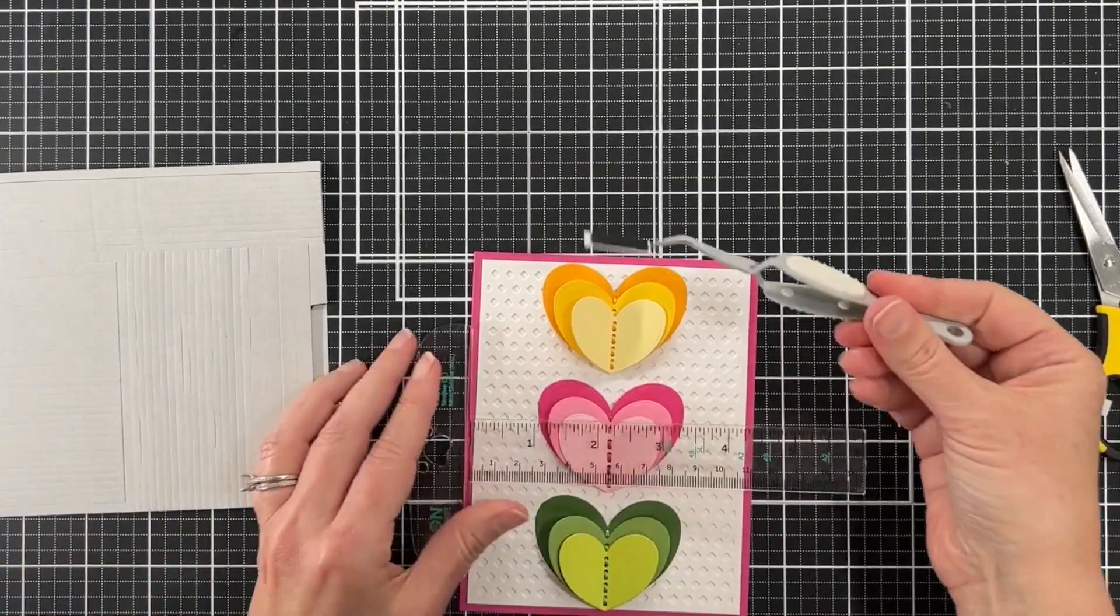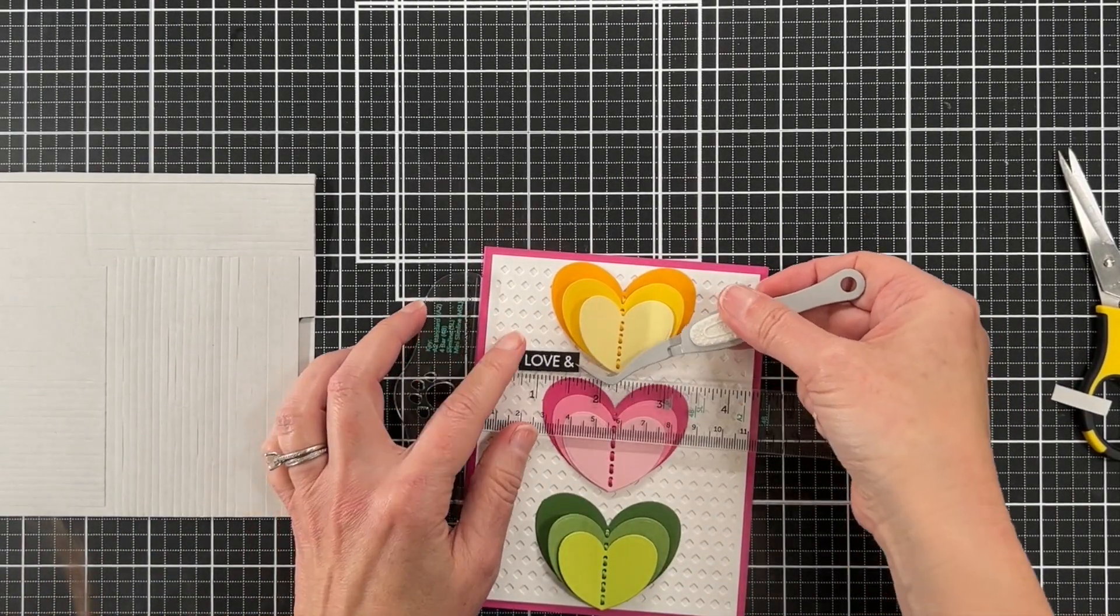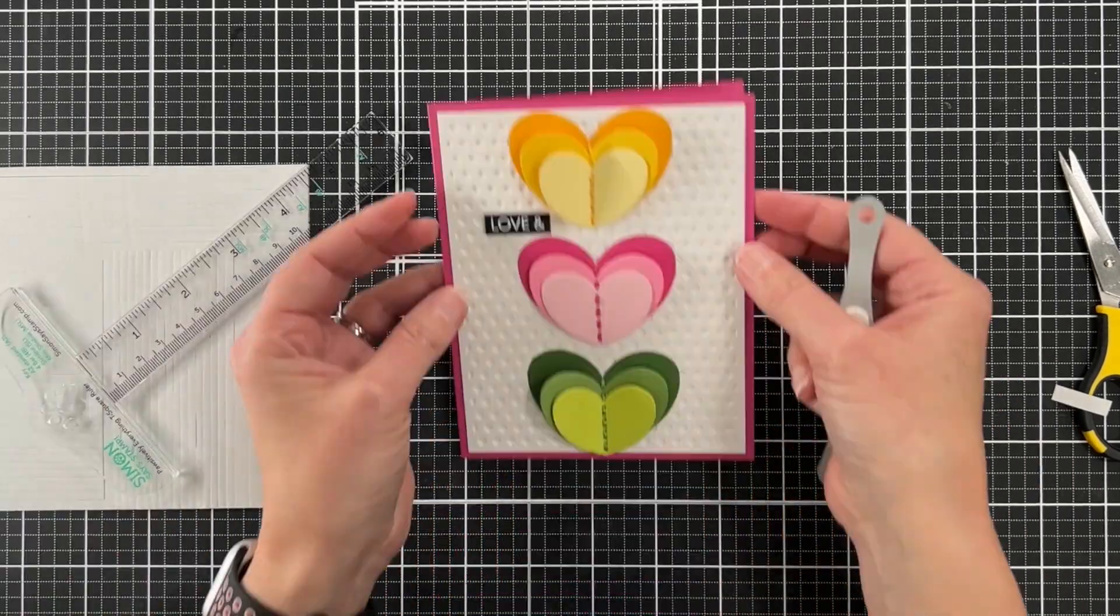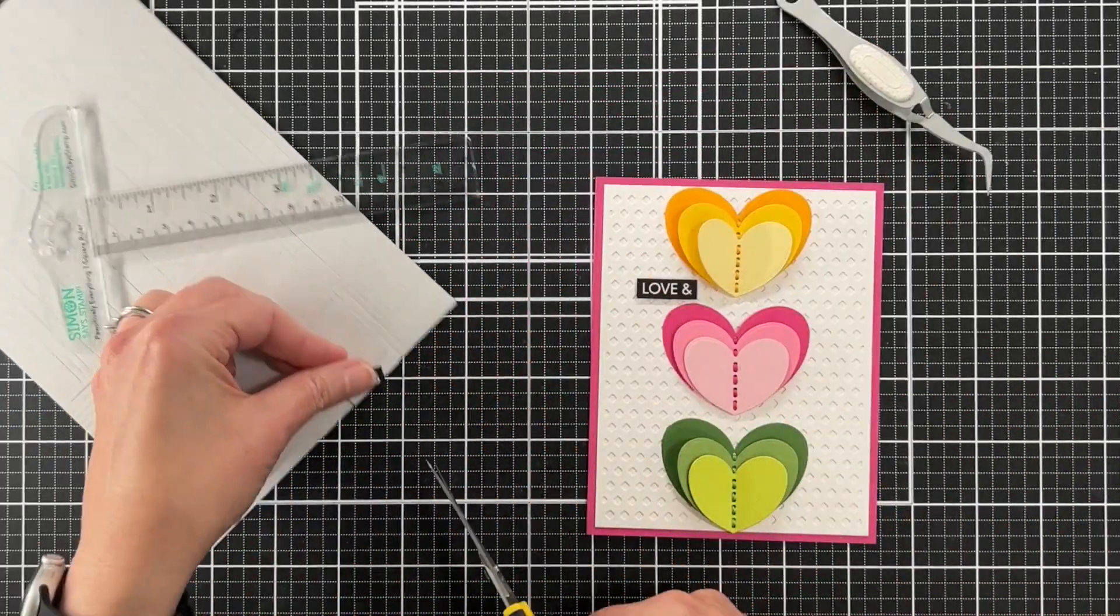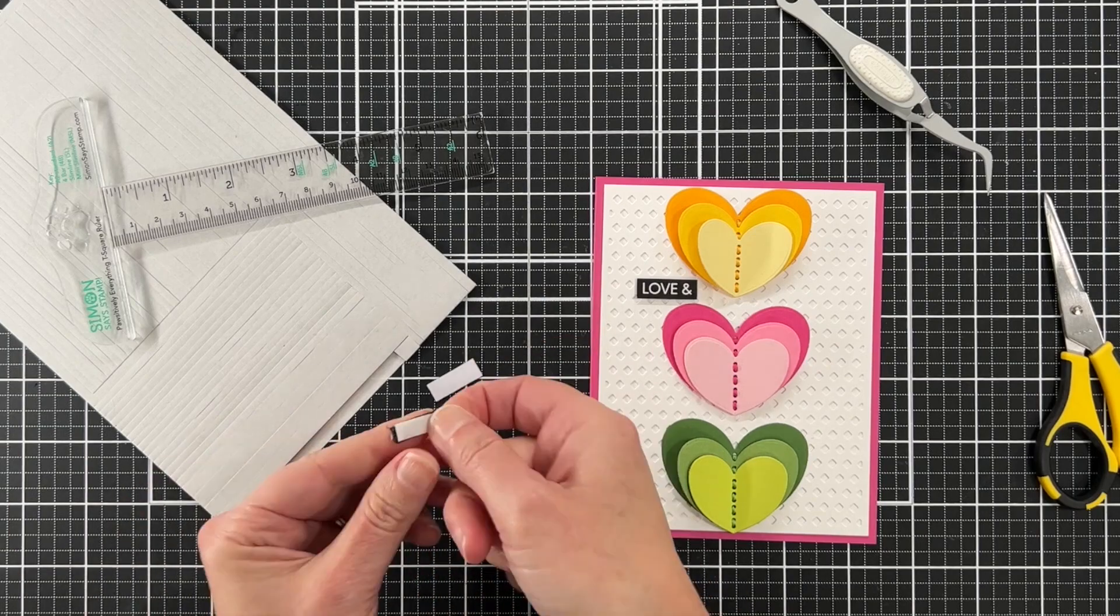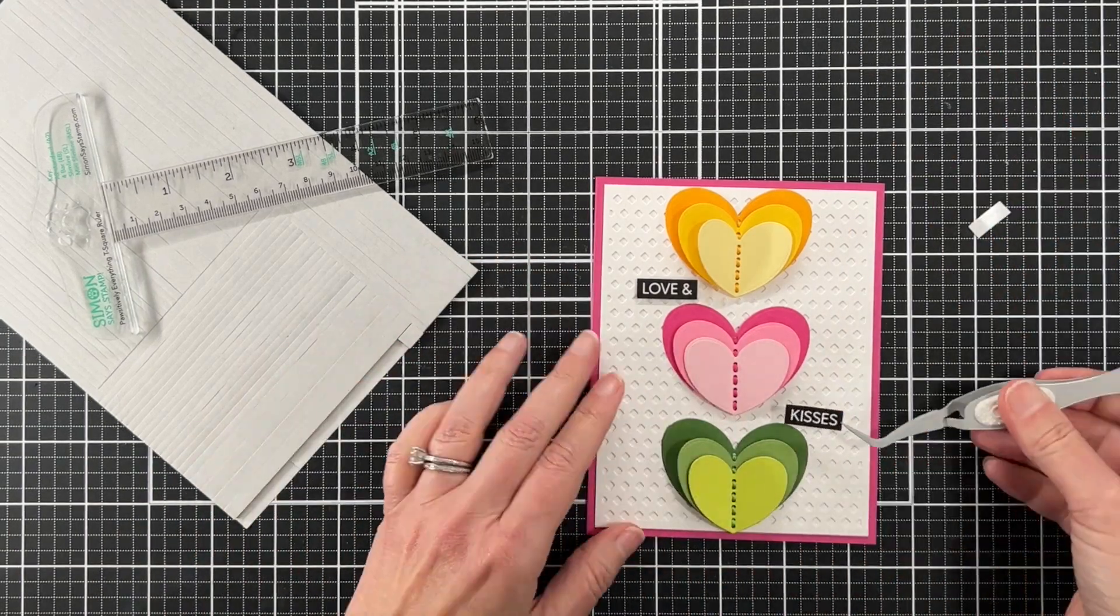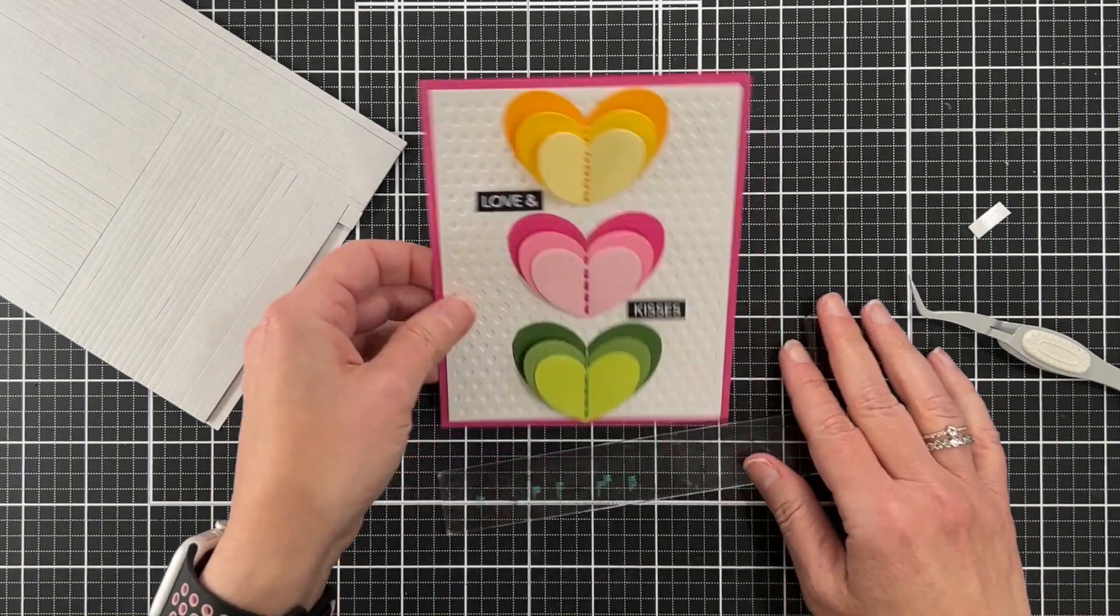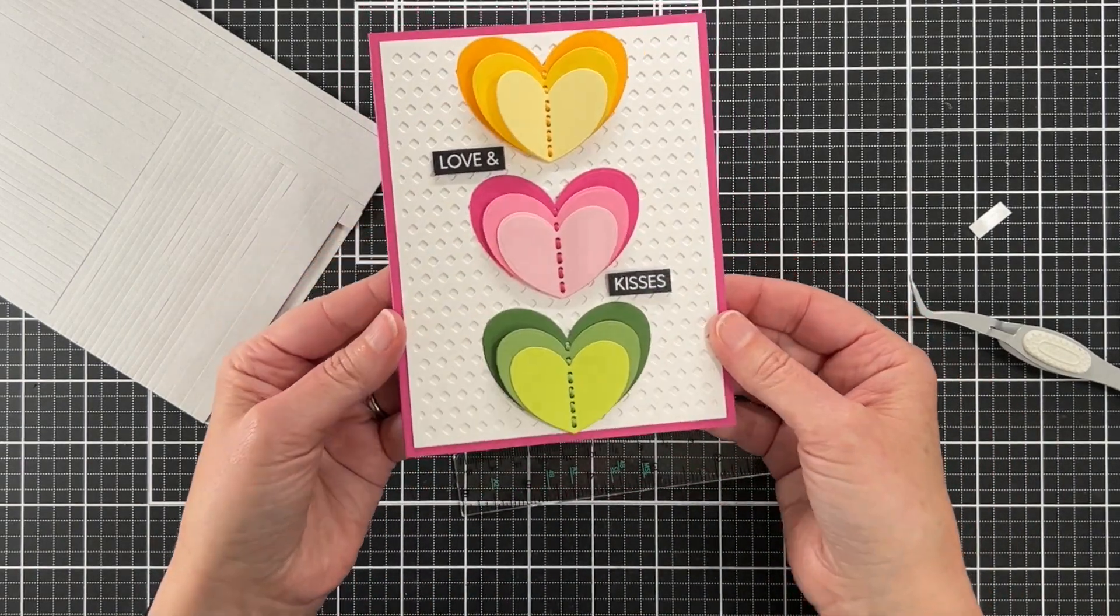The foam strips are also really perfect for shaker cards as well. I'm using my T-square ruler to make sure these sentiments are lined up perfectly. And that was a really quick card to make, wasn't it?